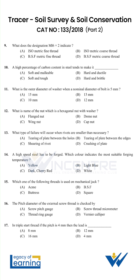What does the designation M16x2 indicate? Option A: isometric fine thread. A high percentage of carbon content in steel tends to make it Option D: hard and brittle.